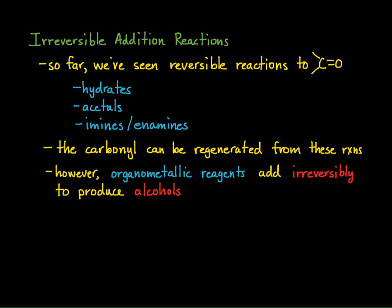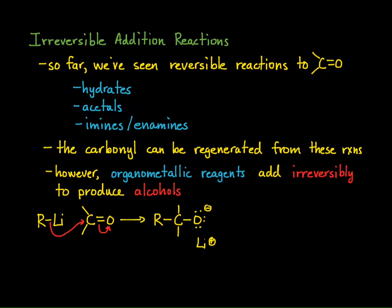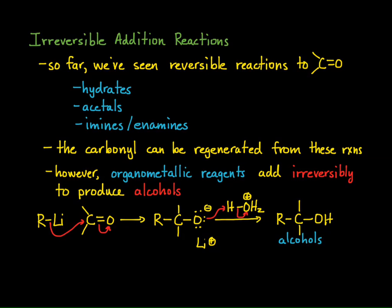This is a great way of being able to synthesize many different types of alcohols. The common organometallic reagents we're going to focus on are organolithium and Grignard reagents. An organolithium reagent reacts with the carbonyl — the carbonyl carbon has a partial positive charge, so the organolithium attacks that carbon, displacing the carbon-oxygen double bond. The result is a lithium alkoxide. When we treat that alkoxide with aqueous acidic conditions, we can protonate it, and the result is an alcohol.